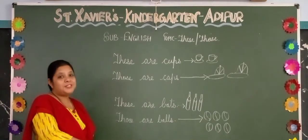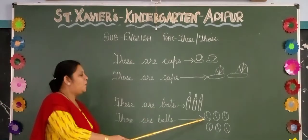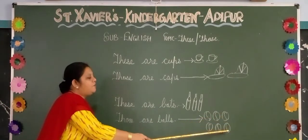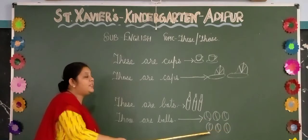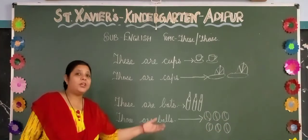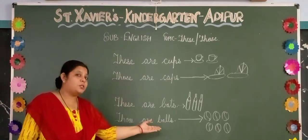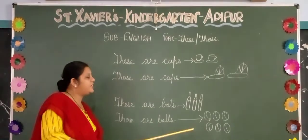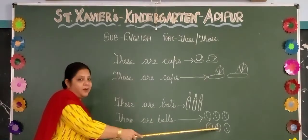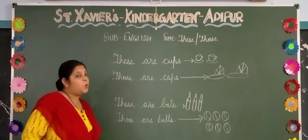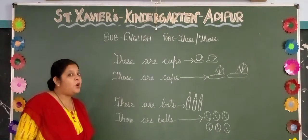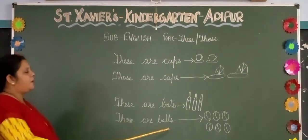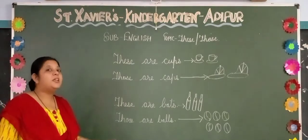Balls — count how many balls there are. One, two, three, four, five, six. Six balls. But they are far — you can see they are far. So what will you say? Those are balls. Correct.